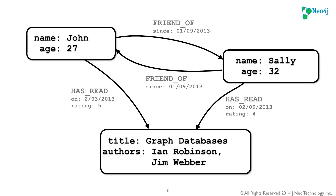The next step is to add key-value pairs. We have a few nodes with key-value pairs on them. John and Sally now have a name property and an age property. On the relationship type 'friend of', we have the date they've been friends since. We also see the date they read the Graph Databases book. On the book node, we see an authors property listing Ian Robinson and Jim Weber. This is the basic property graph data model — this is what we store and query in Neo4j.